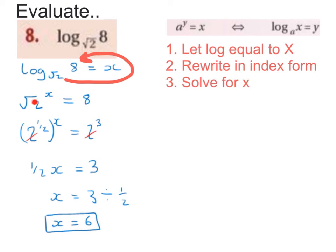I'm going to rewrite root 2 as 2 to the power of a half, and I must have brackets around it. And I'm going to rewrite 8 as 2 to the power of 3. Now I can see that my bases are matching, so I can cancel out the 2s. I'm raising a power to a higher power, so I multiply the powers. A half times x is a half x — a number times a letter, we stick them together — and I just bring down the 3. So it's going to be a half x is equal to 3, so x is going to be equal to 3 divided by a half, which is 6.